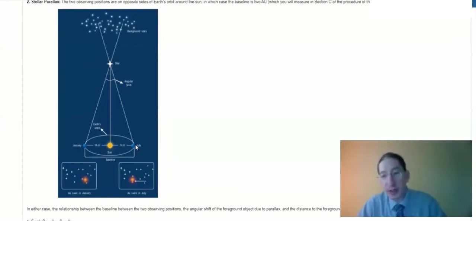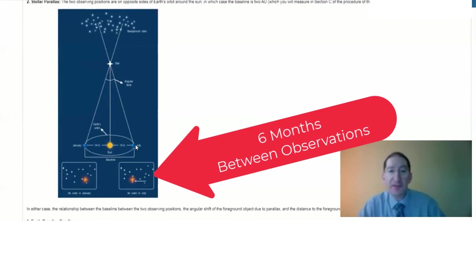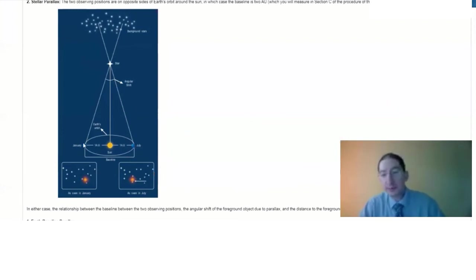Also, when doing stellar parallax, the observations have to be carried out six months apart, because that's how long it takes to get from one side of the orbit to the other. So in this particular example, here we are in January, observing this nearby star, and we see it around these background stars. We then wait six months and observe in July, and the nearby star appears to have shifted to the vicinity of these background stars. Of course, it didn't shift. We shifted our vantage point.